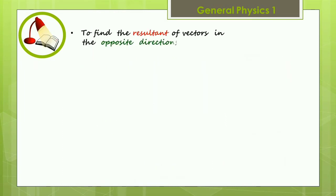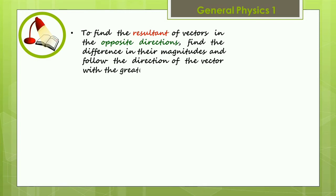To find the resultant of vectors in the opposite directions, find the difference in their magnitudes and follow the direction of the vector with the greater magnitude.